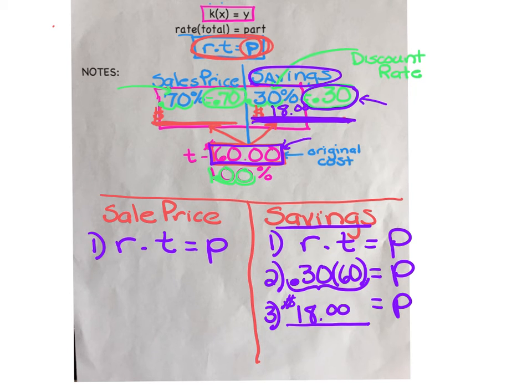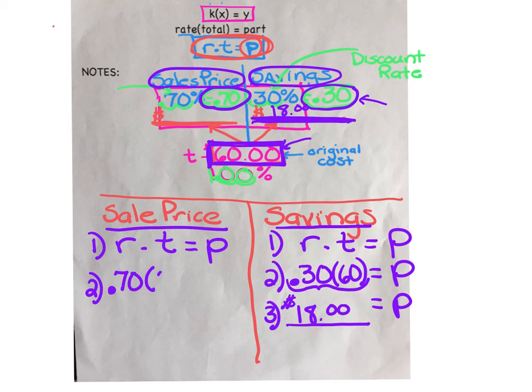How about how much do you have to spend? What is your sale price? Well, for the sale price, we're going to use a rate of 0.70. We get to spend at a rate of 70 cents out of every dollar. We're still going to use the total of 60, but this rate will be slightly different. So for the sale price, 70 cents, 0.70 times 60 equals the part we owe the store, also known as the sale price.